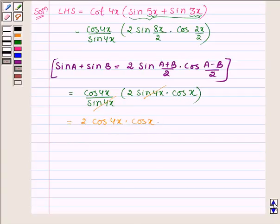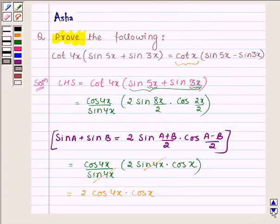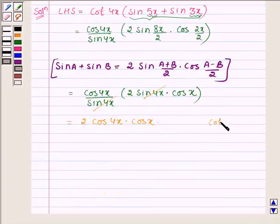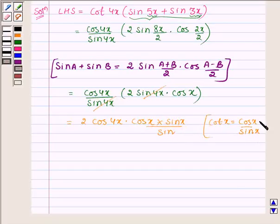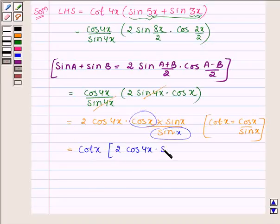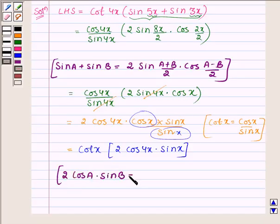Now in the right hand side we need cot x, so to get cot x what we do is multiply the numerator and denominator by sin x, since cot x is equal to cos x upon sin x.